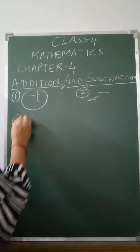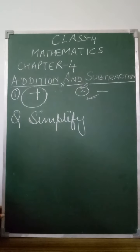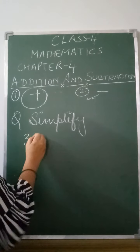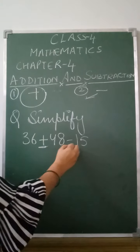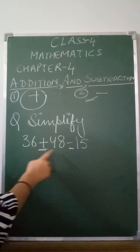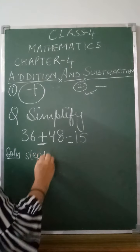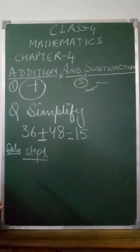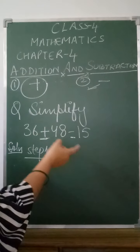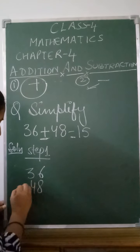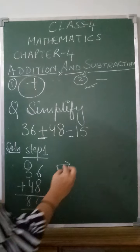Let's take one example. Suppose the question is: Simplify 36 + 48 - 15. Here two operations are together — this is a combined operation of addition and subtraction. According to the rule, when the question says 'simplify,' you add first. So Step 1: 36 + 48. The answer is 84.